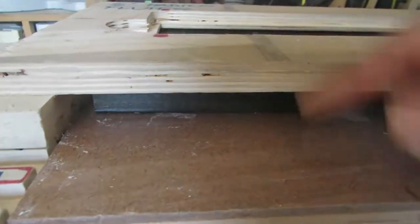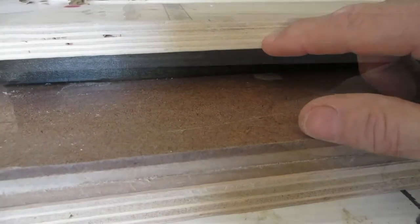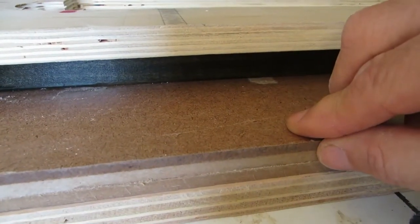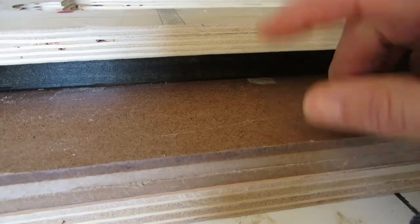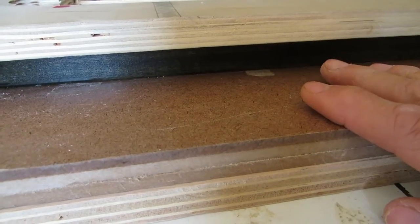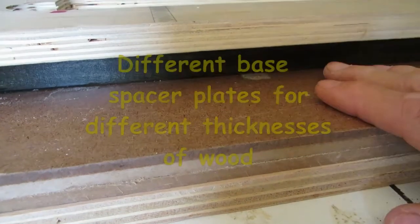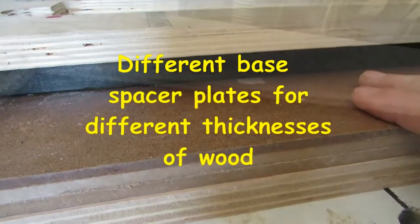So I unscrew it and I can change it out. If I have a thicker piece I want to make a fluted column on, I would just make a new one of these to the size that I need. So I'd have several of these for different variations of woods, and I don't need to throw anything away, I can just keep using them.